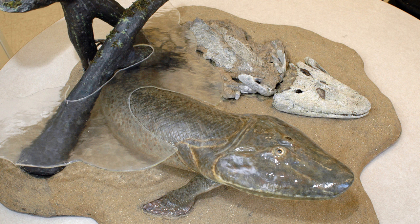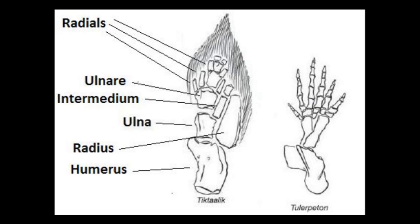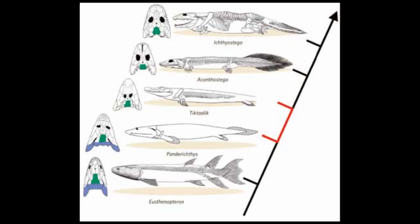Tiktaalik has gills, scales, and fins — it clearly lived in the water. But more importantly, it has eyes and nostrils on the top rather than the sides of its skull, enabling it to peer above the water. It also had robust fins allowing it to push itself above the water and look around. Additionally, these fins have the precise arrangement of bones predicted by comparative anatomy — these appendages are best described as half-fin, half-leg. Even more interestingly, Tiktaalik has sturdy ribs for pumping air and a neck. Fish do not have necks; in them, the skull joins directly to the shoulders. Using the tools from the fossil record and comparative anatomy, researchers can go to a precise location in the world and find a transitional fossil with the exact features that evolution predicts.